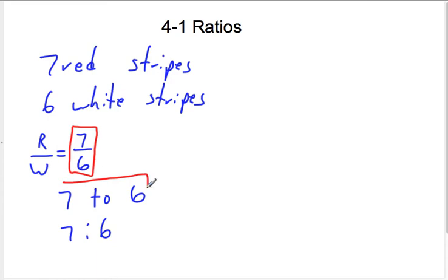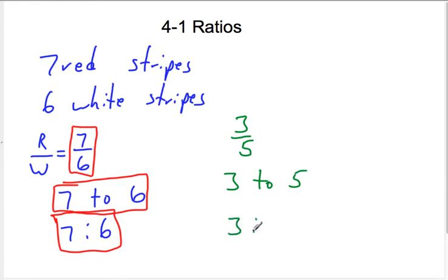It can be written like this, seven to six. And it can be written like this, seven colon six. They'll mean the same thing. So if I were to write the ratio of three to five, for instance, I could write it like this. I could write it like this. And I could write it like this. Three different ways.